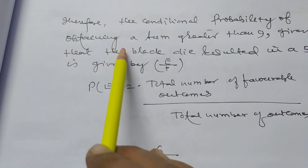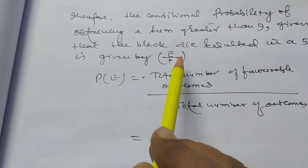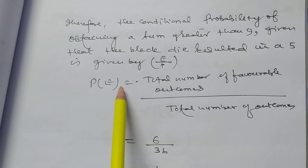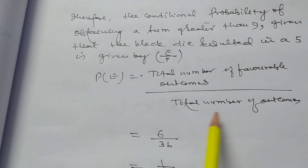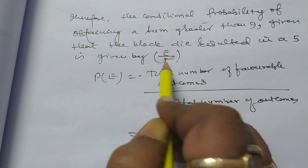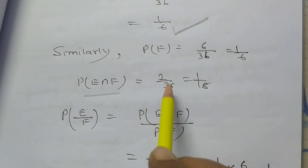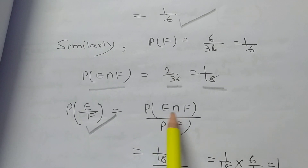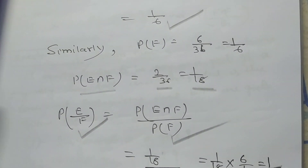The conditional probability of obtaining a sum greater than 9, given that the black die resulted in a 5, is computed as follows. P(E) = 6/36 = 1/6. P(F) = 6/36 = 1/6. P(E∩F) = 2/36 = 1/18. Therefore P(E|F) = P(E∩F)/P(F) = (1/18)/(1/6) = 1/18 × 6/1 = 1/3.